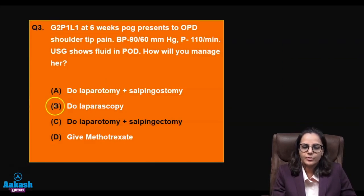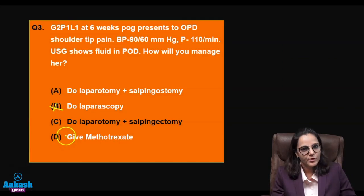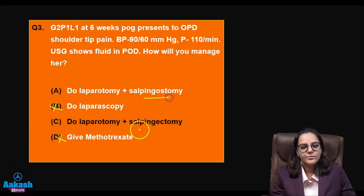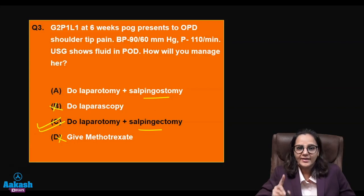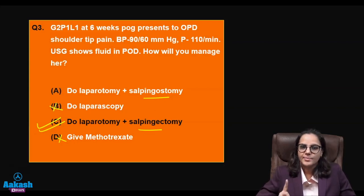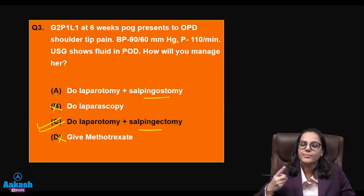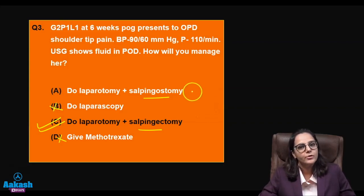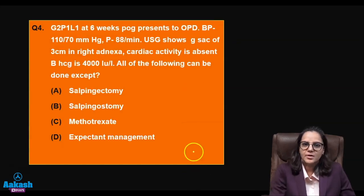Otherwise the surgery of choice is salpingectomy. Going back to the question: laparoscopy — no, because the patient is unstable. Methotrexate — no, because it is a ruptured ectopic. Salpingostomy versus salpingectomy — we will go with salpingectomy. Only if the other tube is absent or has been affected by a prior ectopic would we choose salpingostomy.